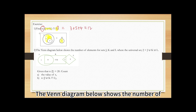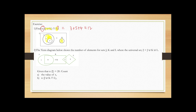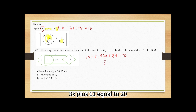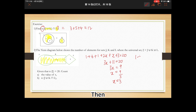The Venn diagram below shows the number of elements for sets J, K, and L, where the universal set ψ = J ∪ K ∪ L. Given that N(ψ) = 20, find the value of X. The equation is: 1 + 6 + 1 + 2X + X + 3 = 20, which gives 3X + 11 = 20, so 3X = 9, and X = 3. Then find N(J ∪ K ∩ L): 1 + 6 + 7 + 3 = 17.